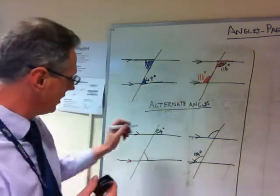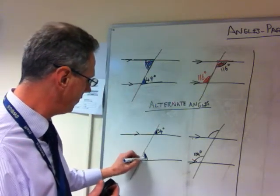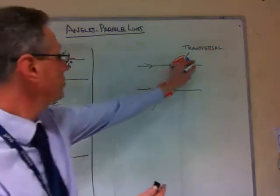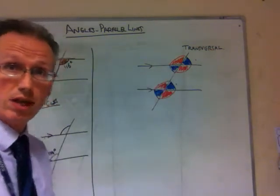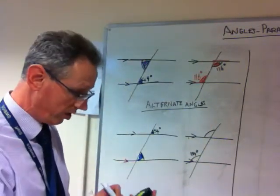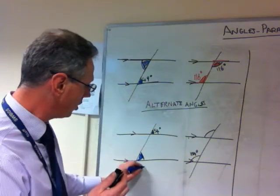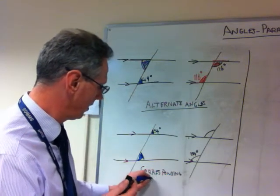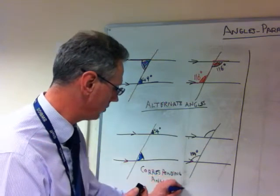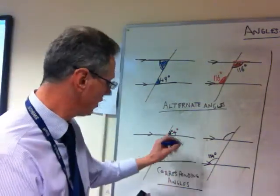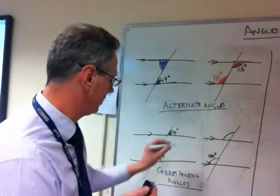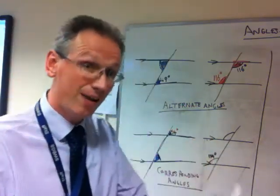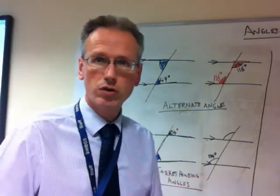The next example: we have 54 degrees here and another angle. We know from our diagram that these two blue angles are the same. The relationship here is called corresponding. They are called corresponding angles. Some people used to call them F angles, but we don't use that term anymore — we always use the term corresponding.